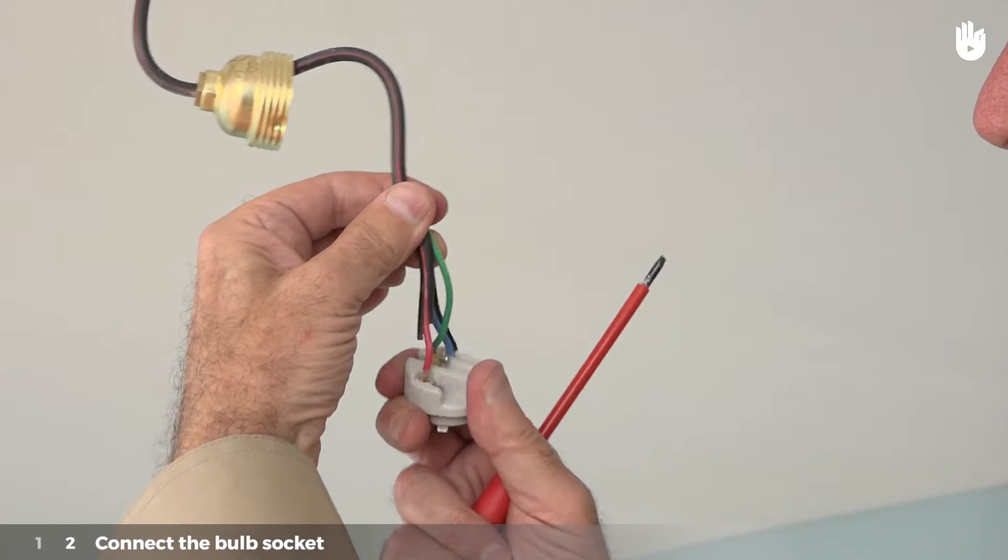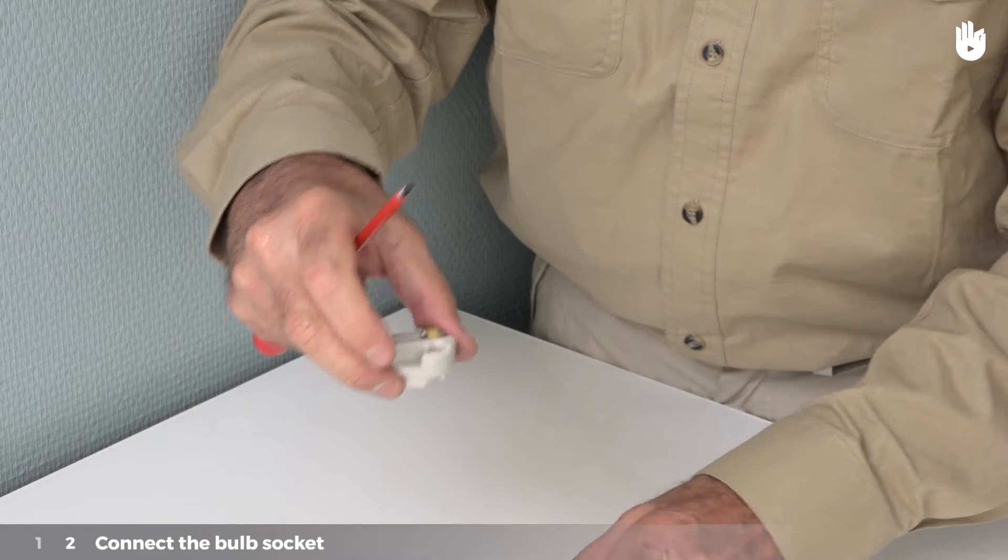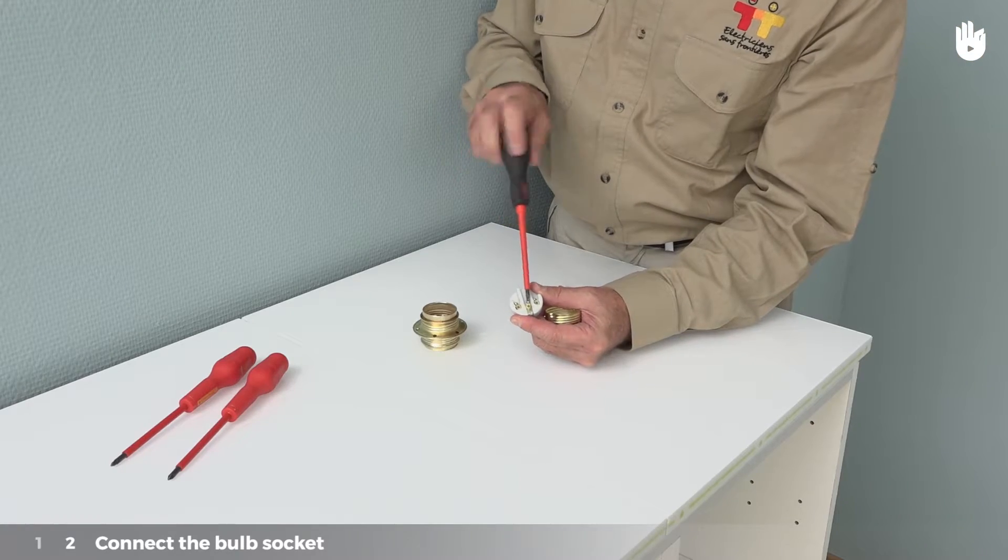Step 2: Connect the bulb socket. Disassemble the bulb socket. Loosen the three screws inside it for the conductors.